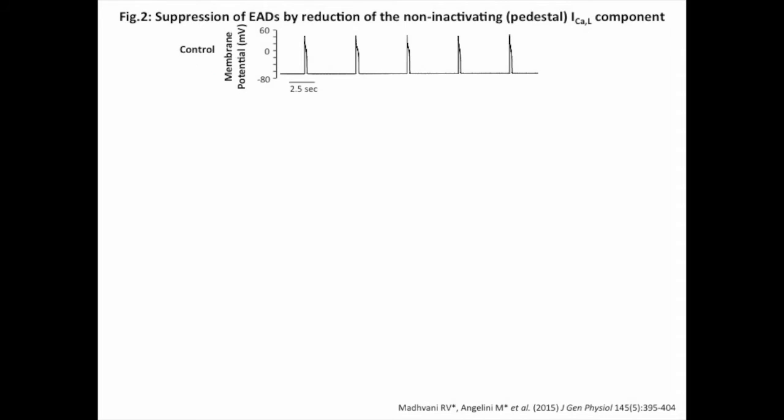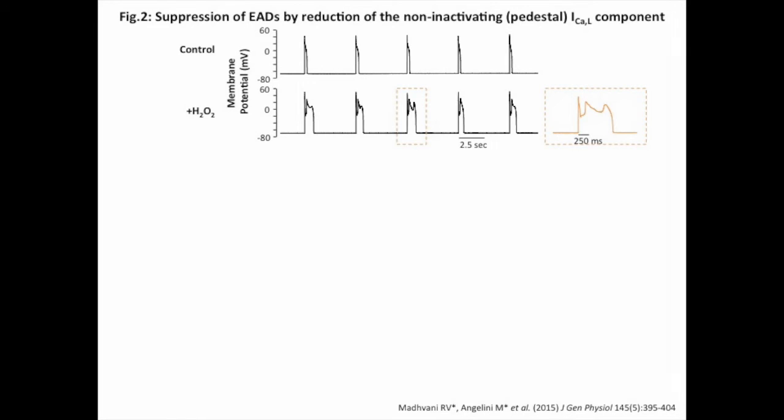In Figure 2, a representative experiment shows that reduction of the L-type calcium channel non-inactivating pedestal current can prevent EADs. In the first panel, we show five consecutive action potentials from isolated rabbit ventricular myocytes paced every five seconds at 37 degrees Celsius. Hydrogen peroxide perfusion imposed a consistent EAD regime, while addition of nifedipine blocked the native calcium channels and completely abolished the EADs, in addition to markedly decreasing the action potential duration.